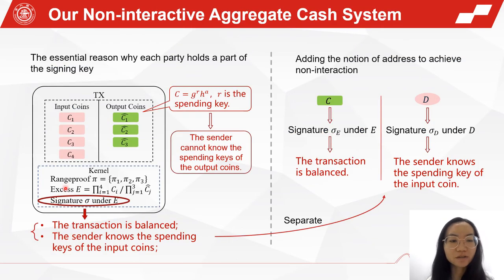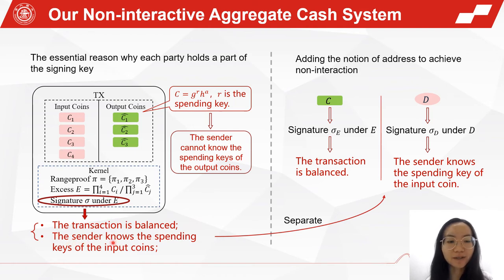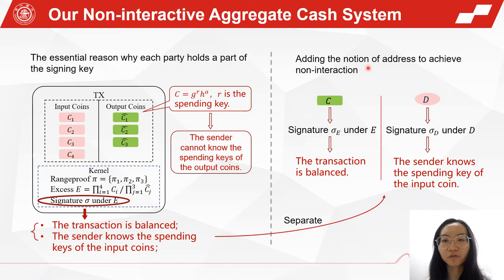We find that in MimbleWimble, the signature under E has two functions. The first is to prove that the transaction is balanced, and the second is to prove that the sender knows the spending keys of the input coins. In our work, we separate these two functions by adding the notion of address to achieve non-interaction. We still use the signature under E to prove that the transaction is balanced, but we use a signature on an address to prove that the sender knows the spending key of the input coin.